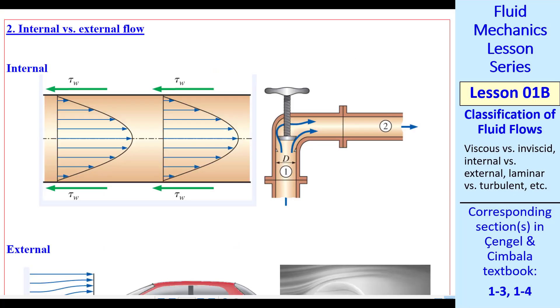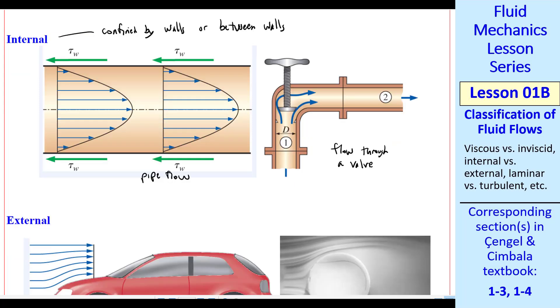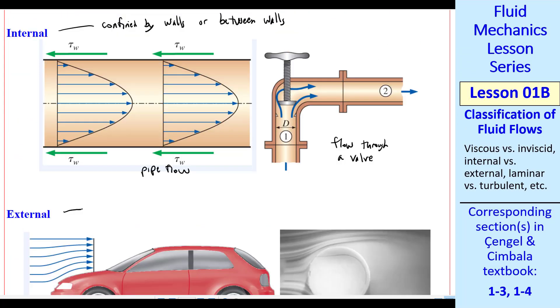The second classification is internal versus external flow. This is a lot easier to explain and understand. Internal flow simply means it's confined by walls or between walls. Some examples would be pipe flow or flow through a valve. That's internal flow. External flow is the opposite. Flow not confined by walls.